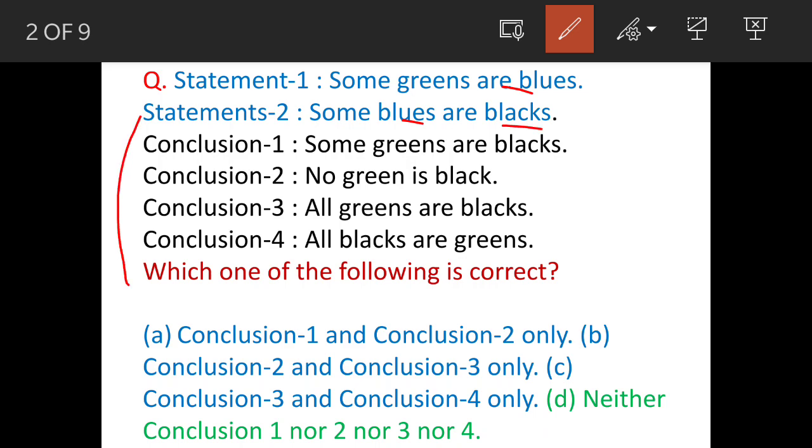Some greens are blues and some blues are actually blacks. Now, there are four conclusions. Some greens are blacks, no green is black, all greens are blacks and all blacks are greens. Now, which one of the following is correct? There are four options given, option A to D about the above conclusions.